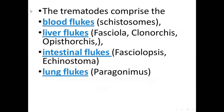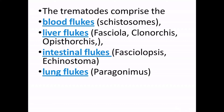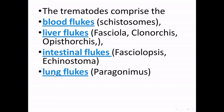رح نتعرف على الـ Schistosoma in our lecture today. Trematodes have four groups or four categories حسب الـ location. عندنا الـ blood fluke مثال عليها الـ Schistosoma، رح نحكي عنهم اليوم. وعندنا الـ liver fluke: الـ Fasciola، الـ Clonorchis، والـ Opisthorchis. بالنسبة للـ intestinal fluke: الـ Fasciolopsis والـ Echinostoma. وبالنسبة للـ lung fluke: الـ Paragonimus.